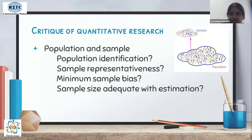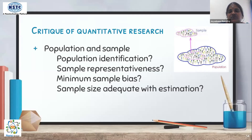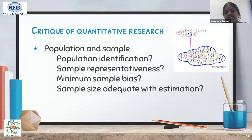Then go to population and sampling. Check whether the study clearly identified the target population, whether the samples obtained are actual representatives, whether there was minimum sample bias, whether samples were adequately taken, and how the sample size was estimated. Check whether the sampling method used was suitable to the research design, and whether the sample size calculation was explained and samples were taken as per that calculation.